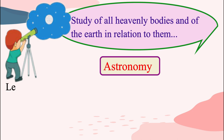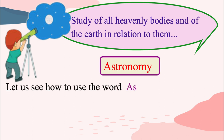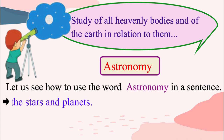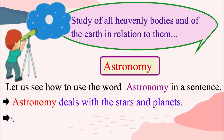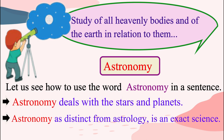Let us see how to use the word astronomy in a sentence. Please repeat after me. Astronomy deals with the stars and planets. Astronomy, as distinct from astrology, is an exact science.